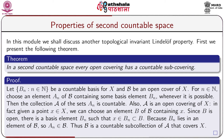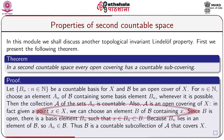For each positive integer n, where it is possible, choose an element A_n of script B containing some basis element B_n. Call this collection script A. Then script A, consisting of the sets A_n, is countable. Also, script A is an open covering of X. Given any point x in X, we can choose an element b of script B containing x. Since b is open, there exists a basis element B_n such that x ∈ B_n ⊆ b. Because B_n lies in script B, A_n belongs to script A by definition. Thus script A is a countable subcollection of script B that covers X.